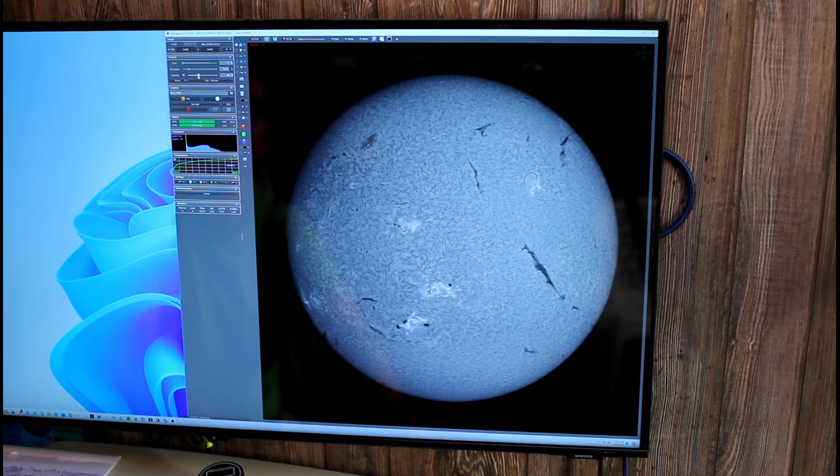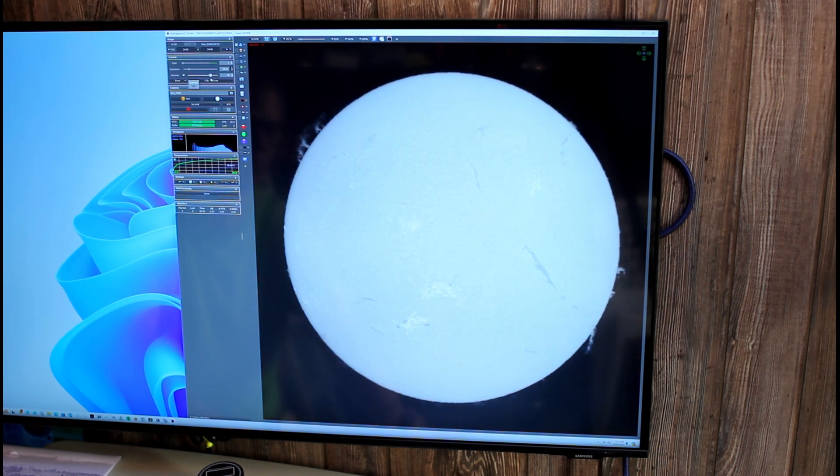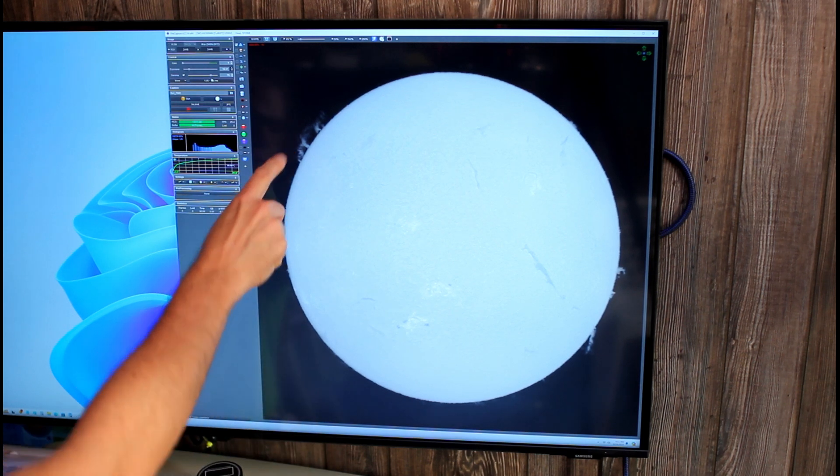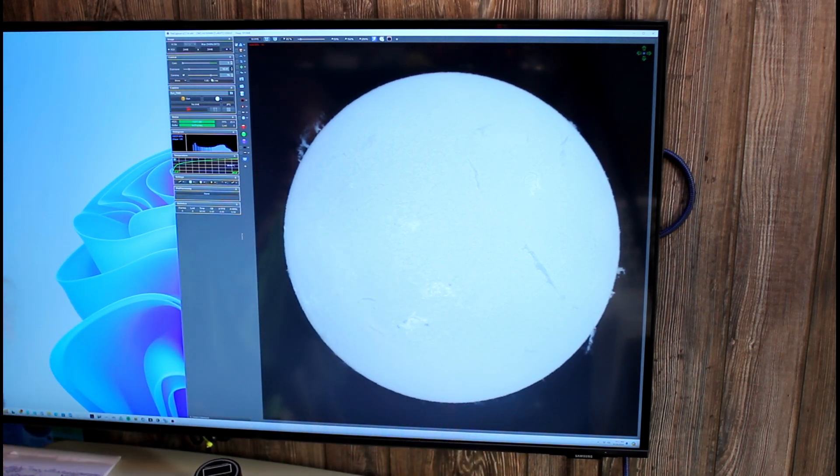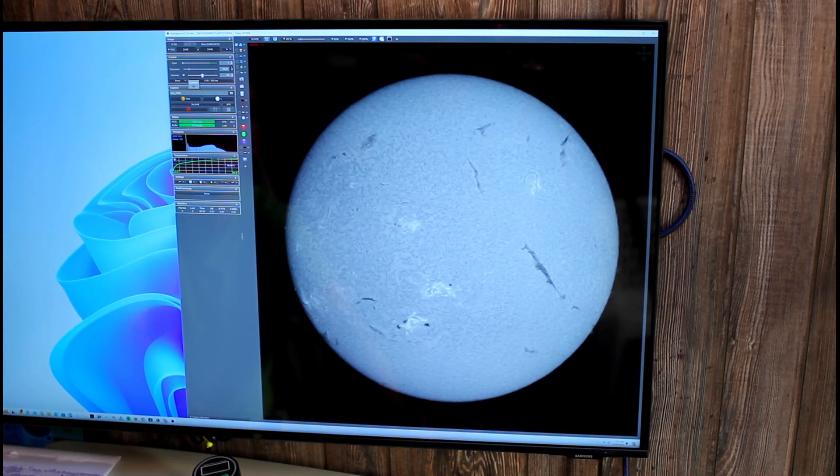If I increase the gamma we can see that there are prominences visible today, up here also over here and here. It's a very active time for the sun right now. I take the gamma back down to where it was.